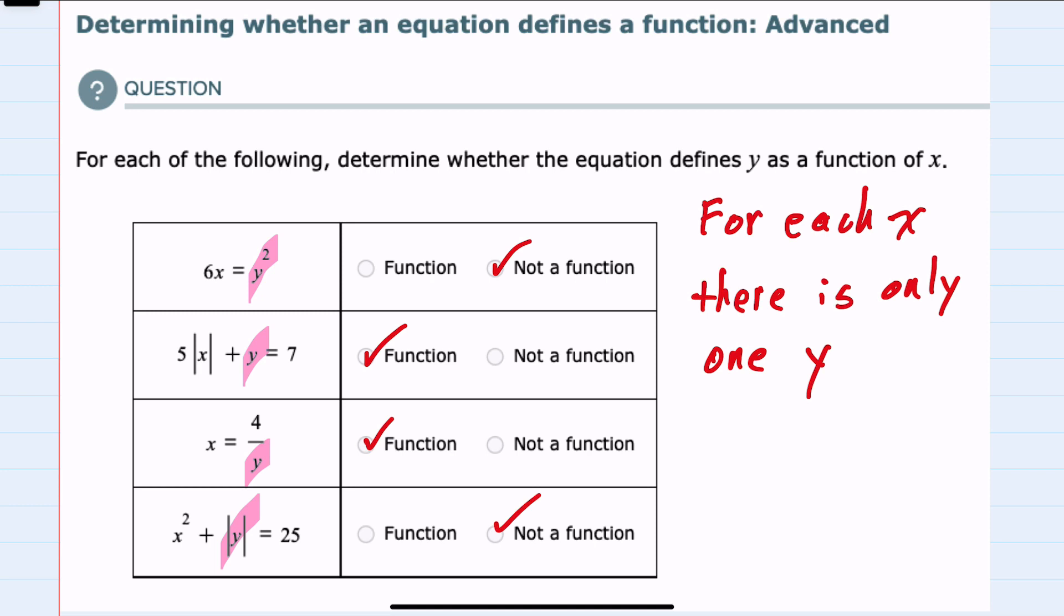We notice that the two situations that caused us to have something that was not a function is whenever we have an operation being performed on the y where two different values being substituted in for y would lead to the same calculation.